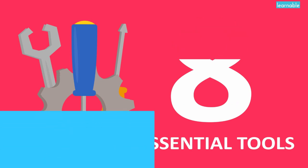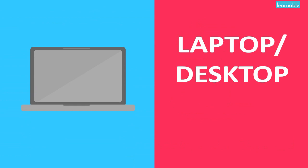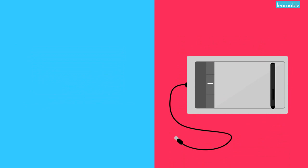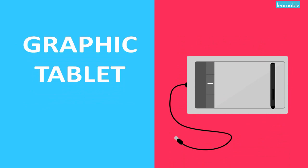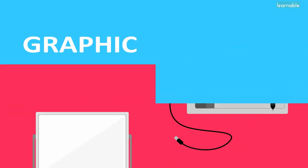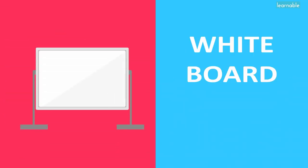First, you need yourself a good computer. This can be a desktop or a laptop — it really doesn't matter. Just make sure it's fast and reliable. You'll also want to get yourself a graphic tablet or a mouse, as this will make designing a lot easier and makes everything more precise. Whiteboards or ample wall space is ideal to allow you to physically rearrange and record your thoughts when away from the computer.